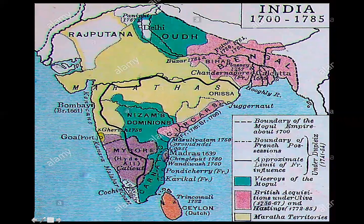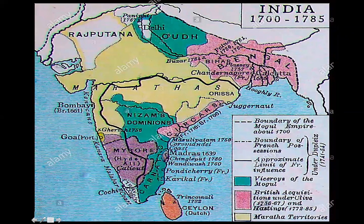The conquest of Bengal was a watershed moment. The EIC would be granted the so-called Diwani of Bengal — control over the administration of the region and the right to collect tax revenue from some 10 million Bengalis. The word 'loot,' a Sanskrit word, would now enter the English language to symbolize the pillage of this incredibly wealthy region. Robert Clive would return in triumph to England an immensely wealthy man, as would other officials of the East India Company.